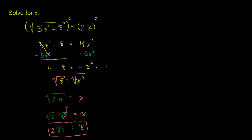So let's substitute this in first to the left-hand side. On the left-hand side, we have the square root of 5 times (2√2)² - 8. And then we're going to have to take the square root of that whole thing.